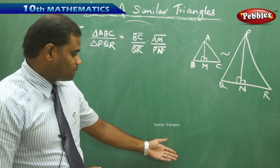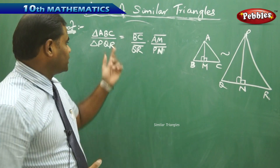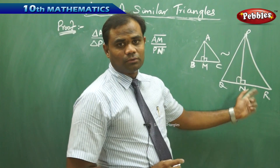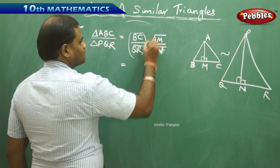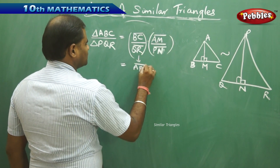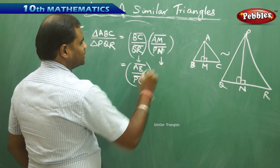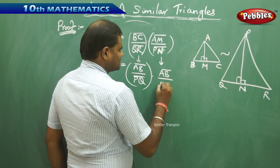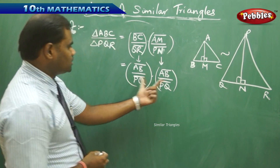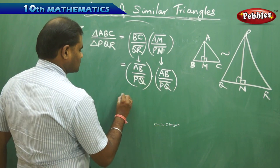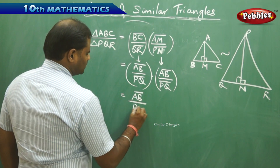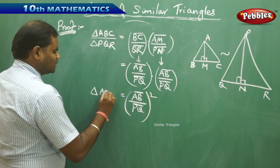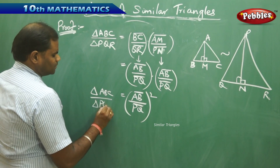So therefore, the ratios as obtained in the previous case, I am going to substitute in the ratio of areas of triangles considered here. Therefore, this was equal to AB by PQ from the ratio. This can be substituted with AB by PQ. And similarly, the other ratio AM by PN can also be substituted for AB by PQ, as I clearly see that they are equal. Now this into this implies AB times AB is AB squared by PQ squared.